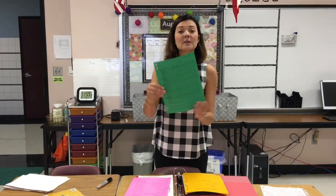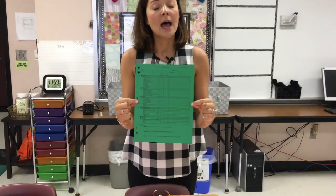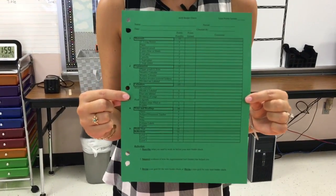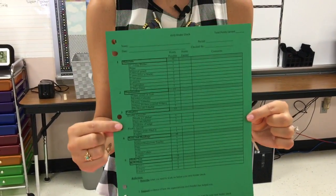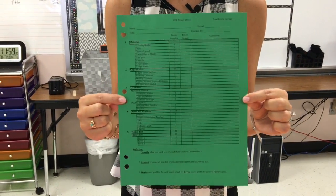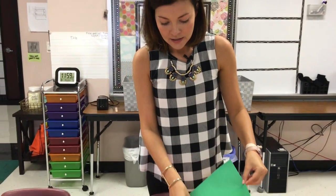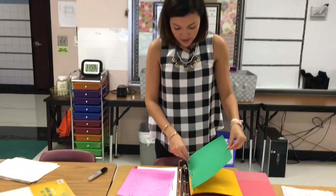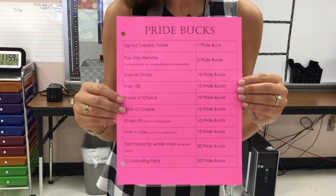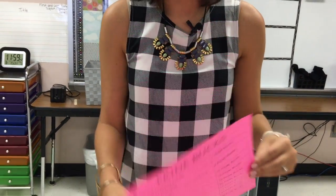Next we have the binder check sheet. Every Friday — or every week — the binder will be checked by the teacher. This ensures that your child is staying organized and prepared to be successful in the classroom. The very last part is a Pride Bucks page, listing things kids can earn rewards for through the school's incentive plan, and I'm going to pop that in there as well.